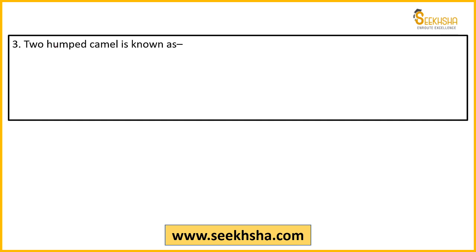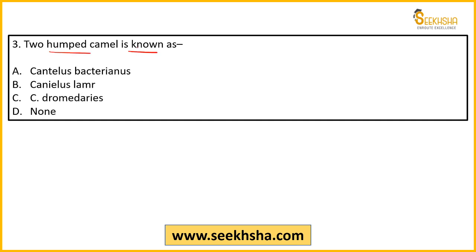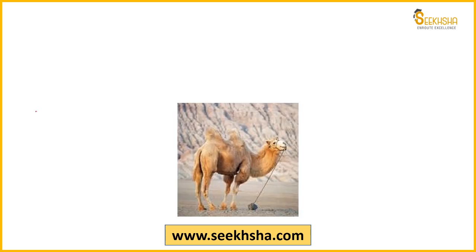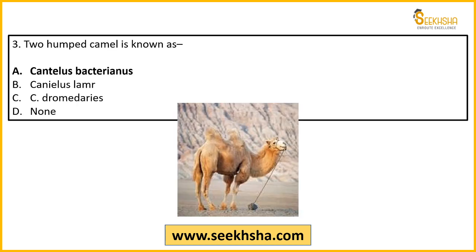Next, question three: The two-humped camel is also known by what botanical name? Options given are: Camelus bactrianus, Camelus lemur, and Dromedarius. The correct answer is option A — Camelus bactrianus. A hump is the fatty deposit on the back of camels and cattle. Generally, camels have a single hump, but the Camelus bactrianus species has two humps, which is why it is also called the two-humped camel.